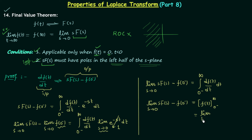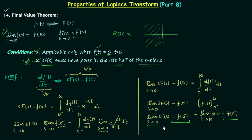Writing out the evaluated integral: the result is limit t→∞ of f(t) minus F(0⁻). On the left hand side we have limit s→0 of s·F(s) minus F(0⁻). Comparing both sides, we see the −F(0⁻) terms cancel, leaving us with: limit s→0 of s·F(s) equals limit t→∞ of f(t). In this way we have clearly proved the final value theorem.